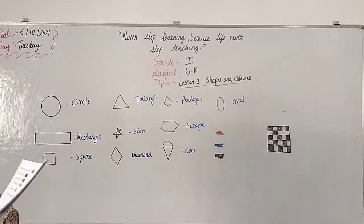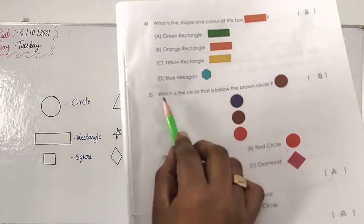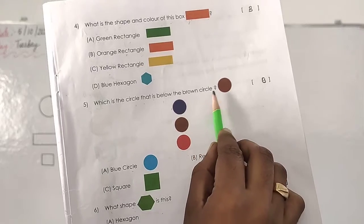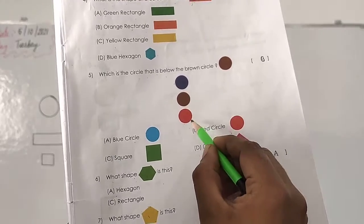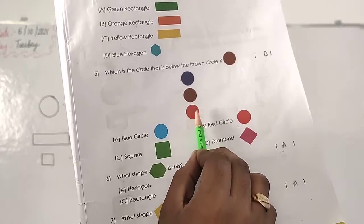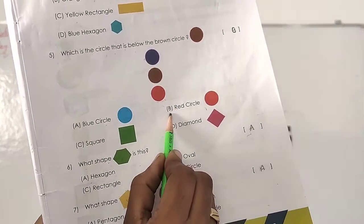Then we are in which question, fifth one now. Which is the circle that is below the brown circle? Below the brown circle. Below means down. Which one is below the brown circle? Red circle. Yes. Option B.